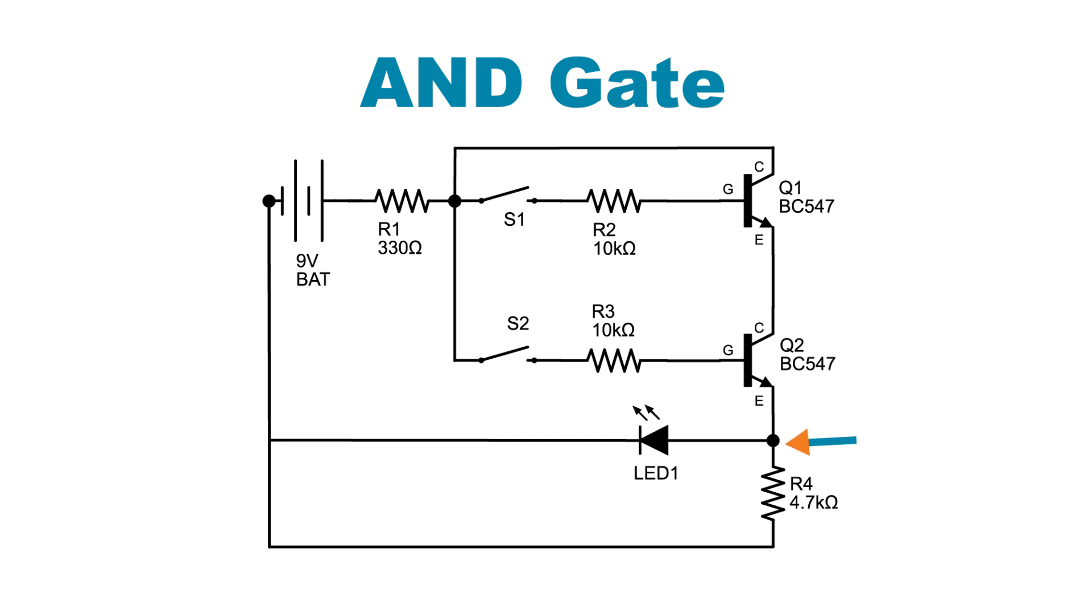Transistor 2's emitter goes to the LED's anode, as well as a 4.7-kilo-ohm resistor, both of which go back to ground.